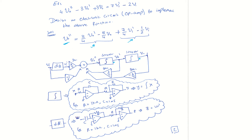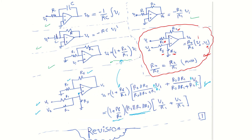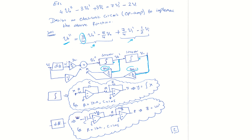If we start with V output double prime, after the first integrator we have V output prime, and after the second integrator we have V output. Now reading the equation: V output double prime equals 3 over 4 times V output prime, so we take a path from V output prime and multiply by a gain of 3 over 4. Then it says minus 5 over 4, so we take a path from V output and multiply by gain of minus 5 over 4. We design these gains using the circuits we covered.